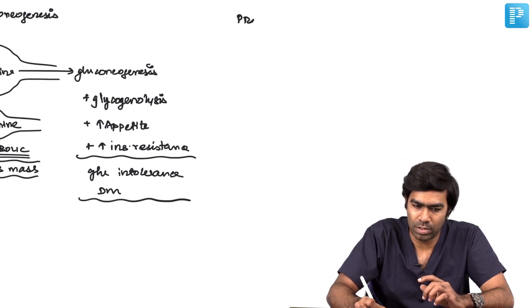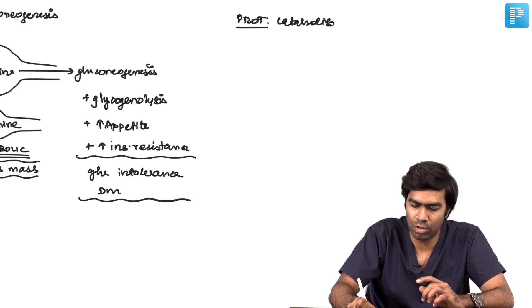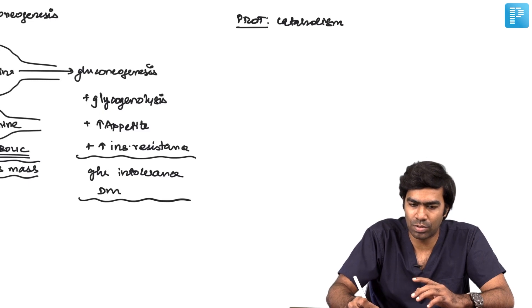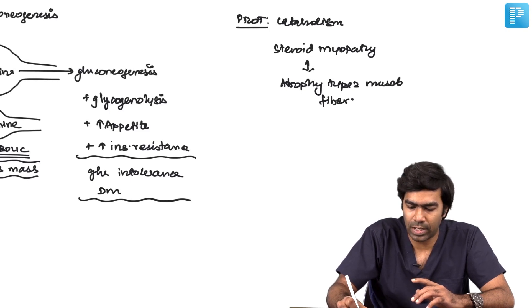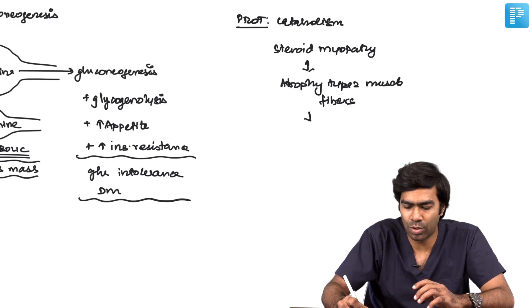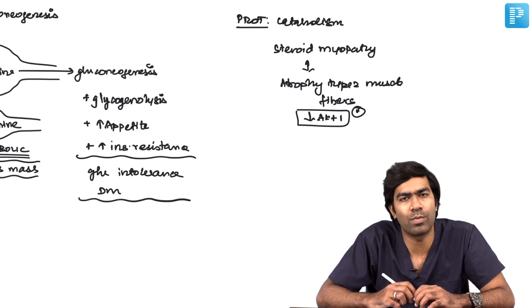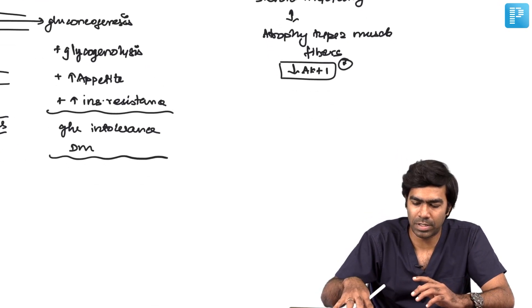Next, on protein metabolism, they are going to produce catabolism of proteins. Very importantly, they can produce steroid-induced myopathy, which is atrophy of selected type 2 muscle fibers. This is due to reduced expression of AKT1 - that is a very important question point.